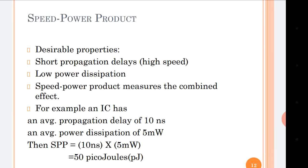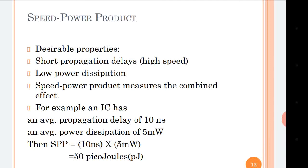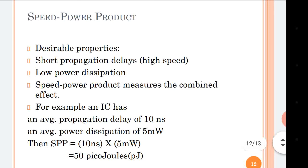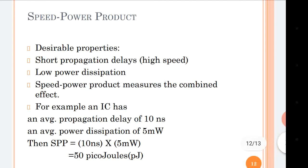Speed power product is one of the important characteristics and is also called the figure of merit. For any logic gate we expect very low power dissipation and very high speed — meaning minimum propagation delay. The product of these two is called the speed power product; it measures the combined effect of high speed and low power. For example, if an IC has an average propagation delay of 10 nanoseconds and an average power dissipation of 5 milliwatts, its speed power product is 50 picojoules.